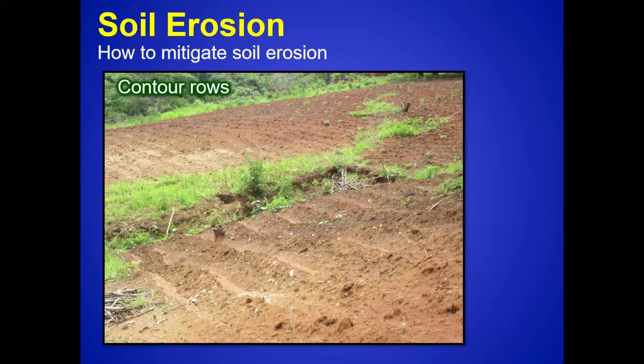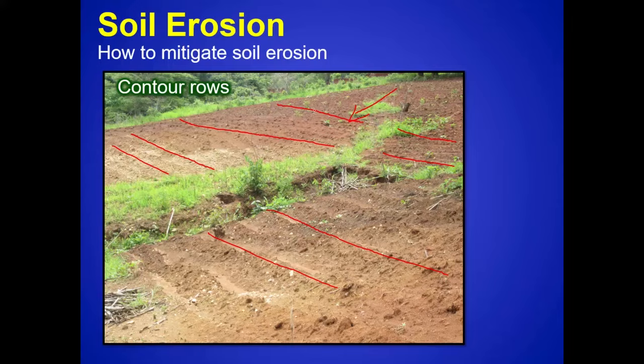Some ways to mitigate and control soil erosion include making your rows contour to the topography. The rows go along the hillside, along the contours. You don't want rows going downhill because that contributes to the water gaining speed. When you have contour rows going along the hillside, it stops the water from gaining speed and becoming a river.